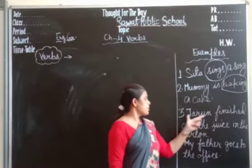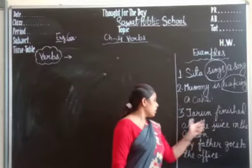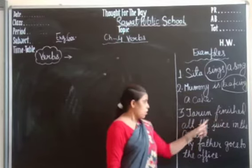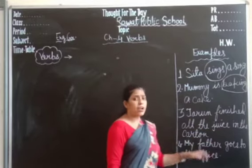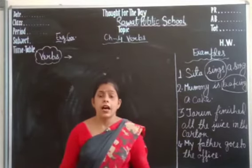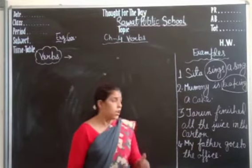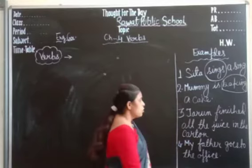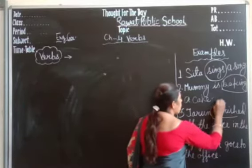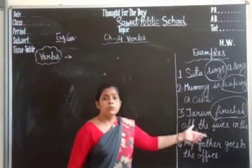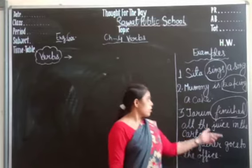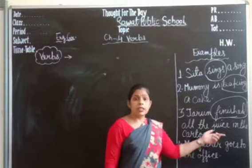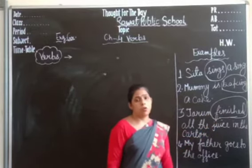The third sentence is: Tarun finished all the juice in the garden. He had done the finishing work. So what verb has he done? He has finished all the juice in the garden. The verb here is finished.